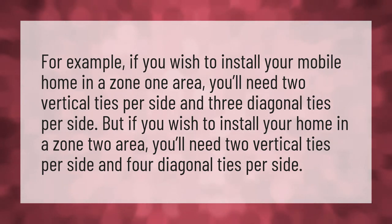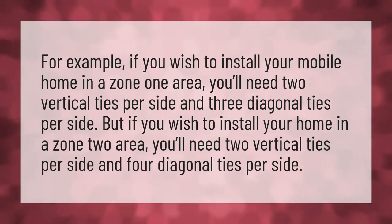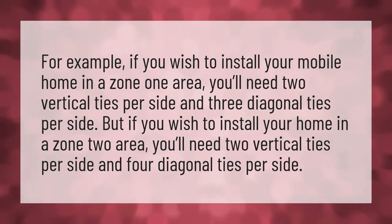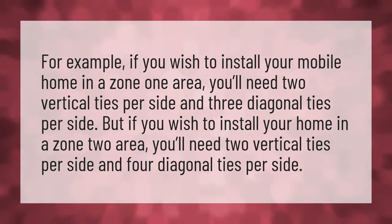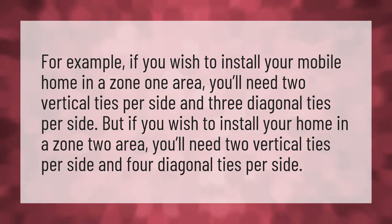For example, if you wish to install your mobile home in a zone one area, you'll need two vertical ties per side and three diagonal ties per side. But if you wish to install your home in a zone two area, you'll need two vertical ties per side and four diagonal ties per side.